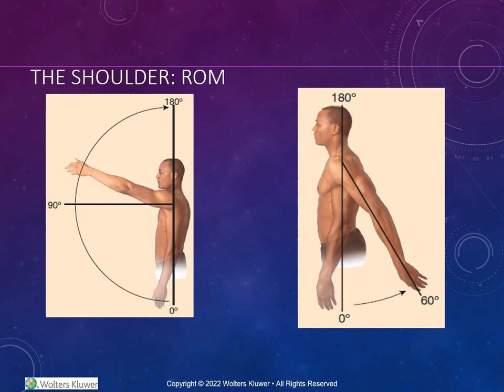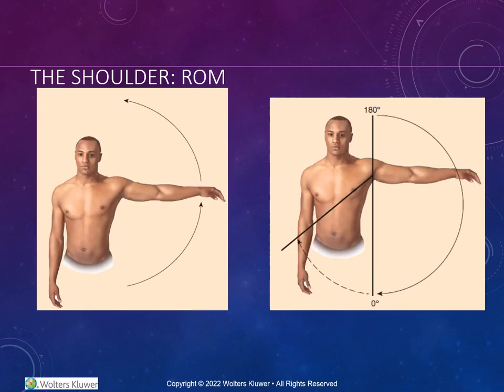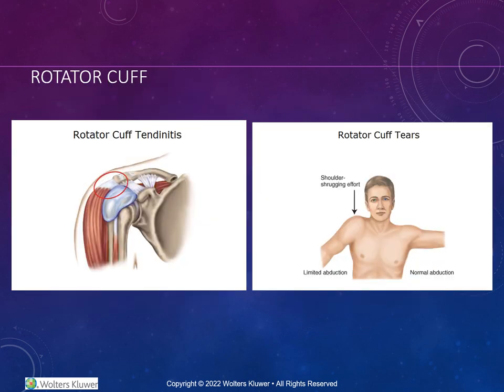The next several slides include a comprehensive assessment of range of motion for the shoulder. The picture on the left represents shoulder flexion — patient instructions would include simply asking the patient to raise your arms in front of you and overhead. Another example on the right is hyperextension — you would ask the patient to raise your arms behind you. On the left side we have abduction of the shoulder, and on the right side adduction. One very common musculoskeletal complaint of the shoulder is rotator cuff tendonitis and tears, where the patient will have difficulty shrugging their shoulders and abduction will be limited.